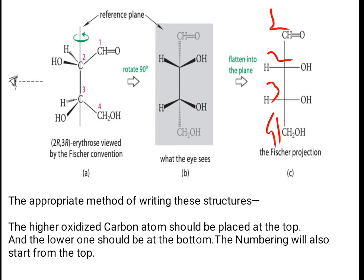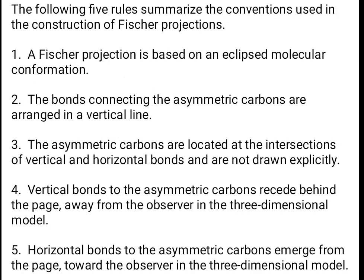The following five rules summarize the conventions used in the construction of Fisher projections. Rule one: a Fisher projection is based on an eclipsed molecular conformation. Rule two: the bonds connecting the asymmetric carbons are arranged in a vertical line. Rule three: the asymmetric carbons are located at the intersections of vertical and horizontal bonds and are not drawn explicitly. Rule four: vertical bonds to the asymmetric carbons recede behind the page, away from the observer. Rule five: horizontal bonds to the asymmetric carbons emerge from the page toward the observer in the three-dimensional model.